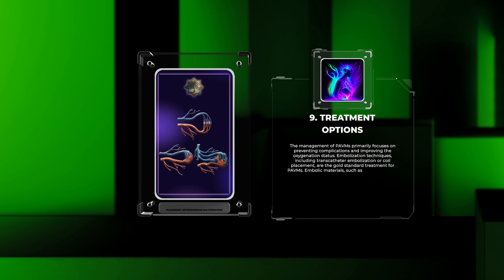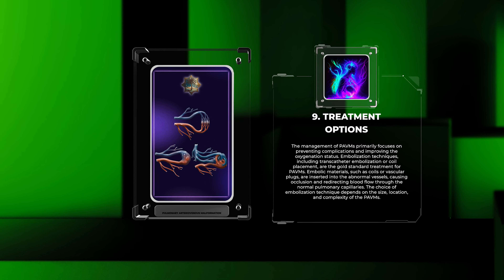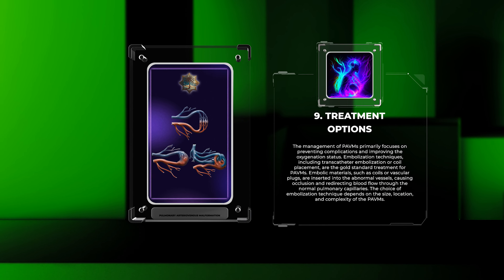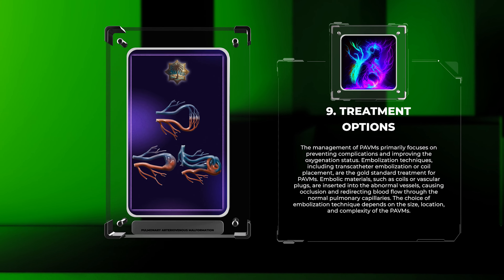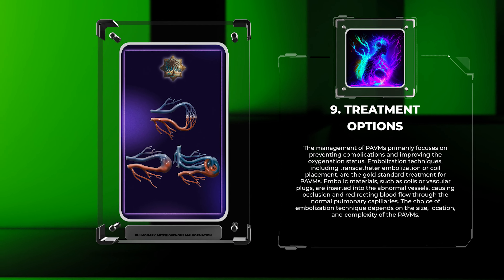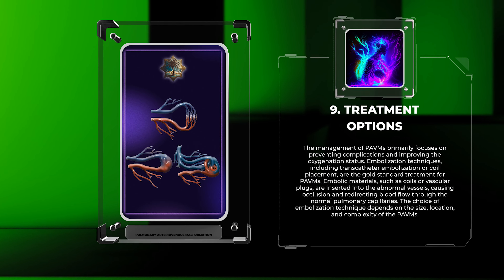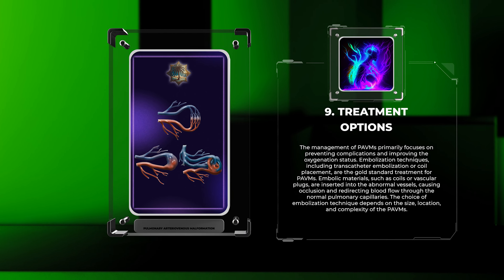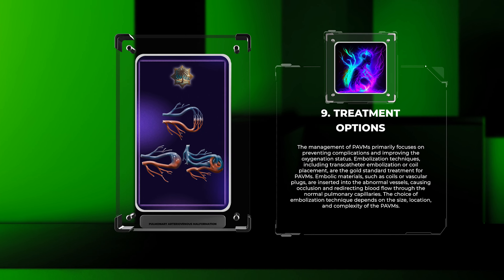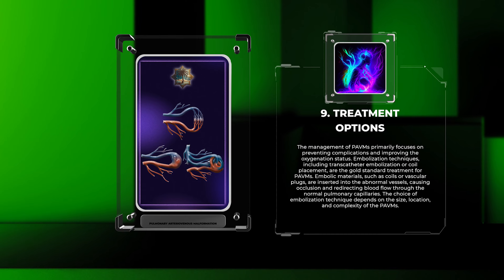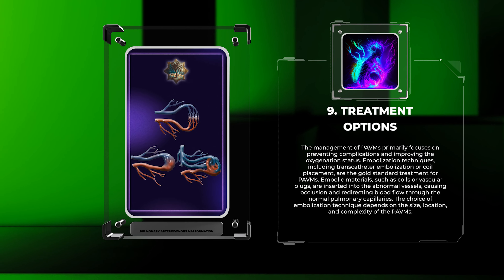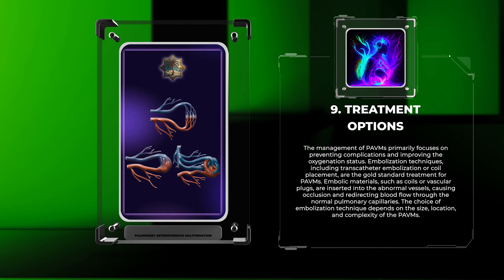The management of PAVMs primarily focuses on preventing complications and improving the oxygenation status. Embolization techniques, including transcatheter embolization or coil placement, are the gold standard treatment for PAVMs. Embolic materials, such as coils or vascular plugs, are inserted into the abnormal vessels, causing occlusion and redirecting blood flow through the normal pulmonary capillaries. The choice of embolization technique depends on the size, location, and complexity of the PAVMs.